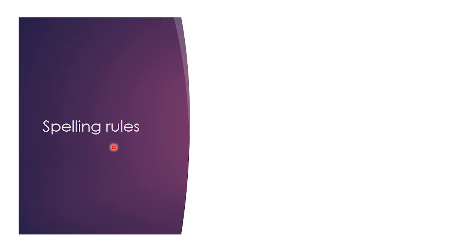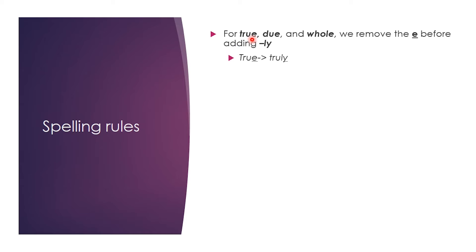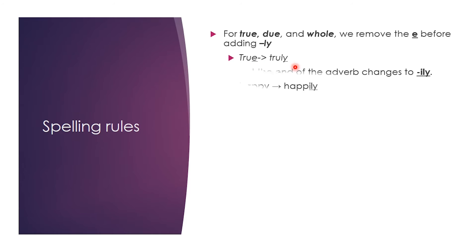Let's get familiar with some spelling rules. The first rule is that if you find words like true, due, or whole — that is, if they contain an 'e' at the end — simply remove the 'e' and add -ly to make an adverb. For example, true becomes truly.